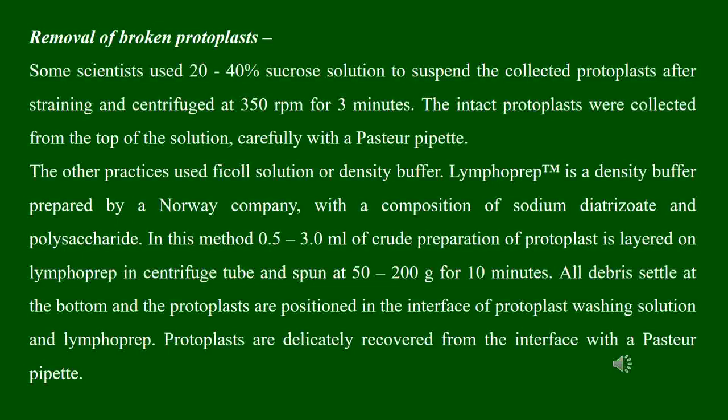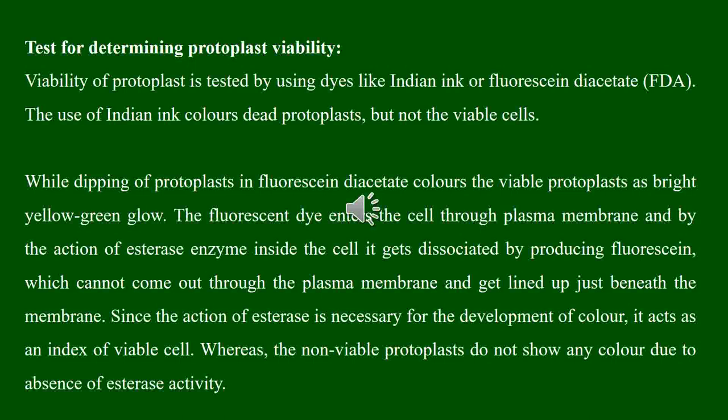In this method, 0.5 to 3 ml of the crude preparation of protoplasts is layered on a mixture of protoplast washing solution and Lymphoprep. The intact protoplasts positioned at the junction of the two solutions are then carefully collected with a pipette.